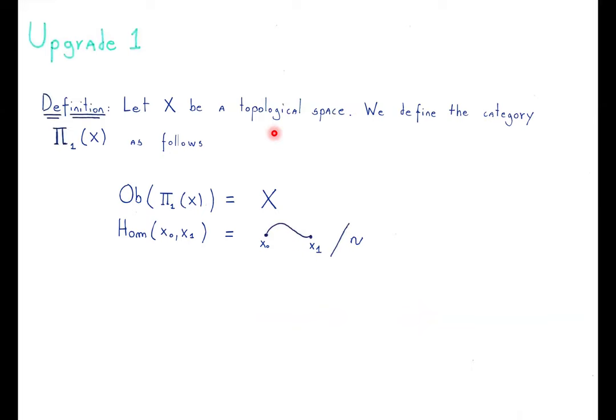The first upgrade will be the notion of a fundamental groupoid — we want to work without the base-point dependence. For that, we define the following category: objects are given by the points of our topological space, and a morphism between two points is given by a homotopy class of paths between those points. This category is called the fundamental groupoid of X.